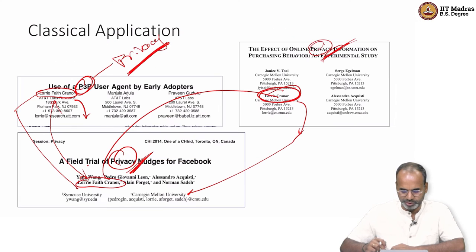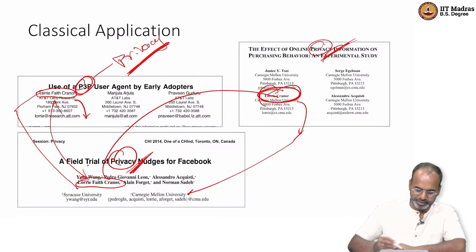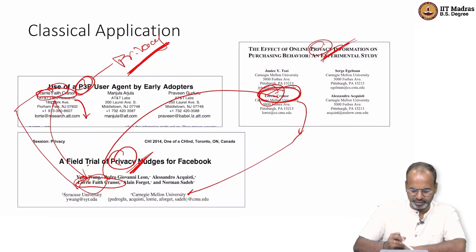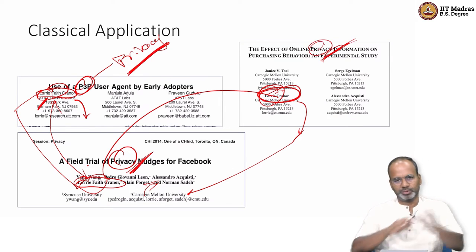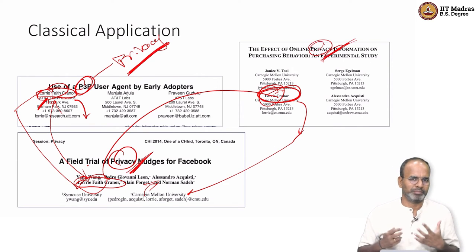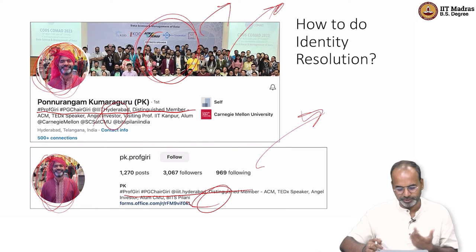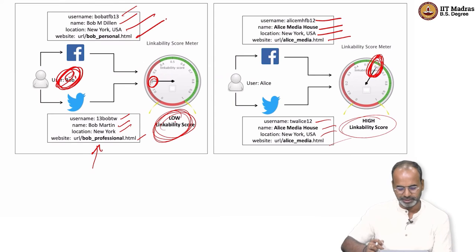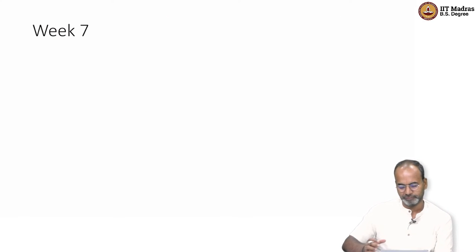We discussed how information can be put together from social platforms and government websites to uniquely identify users even when the number is not in government data and government data is not in Twitter. Identity resolution was a huge chunk of content — connecting Lori with Lori Craner, Lori Faith Craner with a CMU address and then an AT&T address. The combination of first name, last name, middle name, and address allows us to identify these as the same user. A linkability score was created to tell how linkable accounts are.